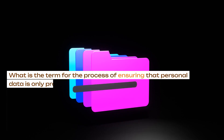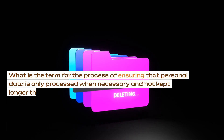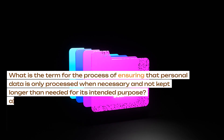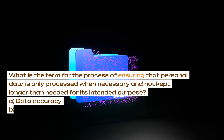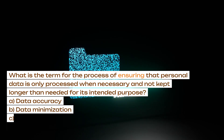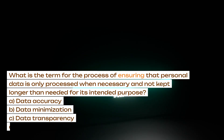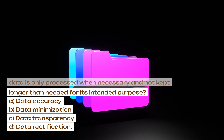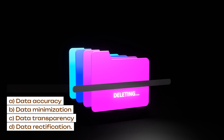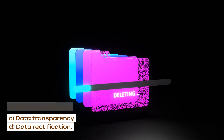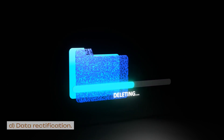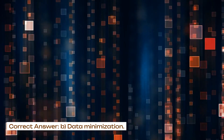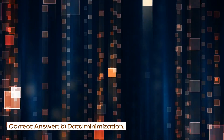What is the term for the process of ensuring that personal data is only processed when necessary and not kept longer than needed for its intended purpose? A. Data accuracy. B. Data minimization. C. Data transparency. D. Data rectification. Correct answer: B. Data minimization.